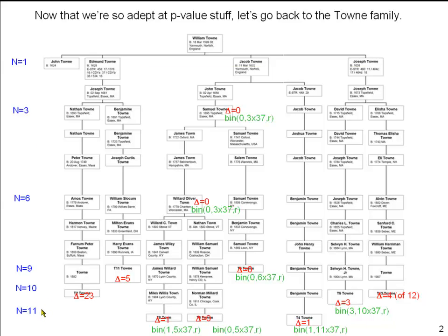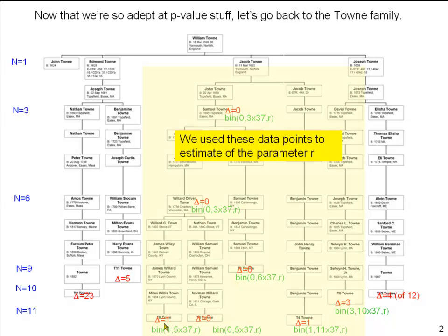What we did before with the Towne family is we used these individuals to estimate how often there's a mutation as we go from generation to generation down the family tree. We did that by making a Bayesian model with binomial probabilities as to how many mutations should be seen after a certain number of generations and in a certain number, usually 37 loci in the genome that were being looked at.